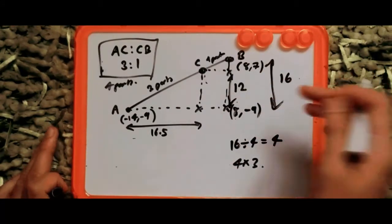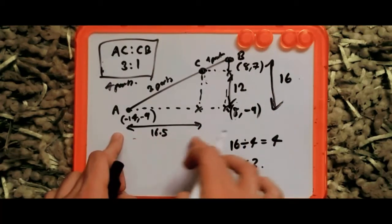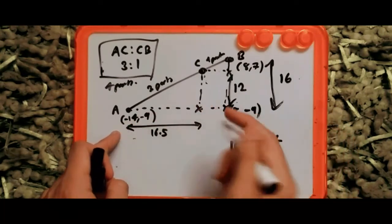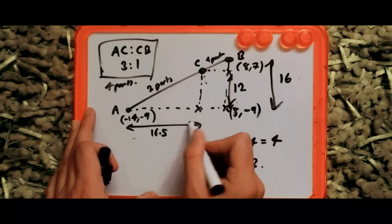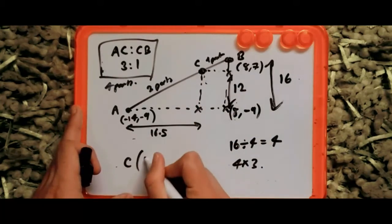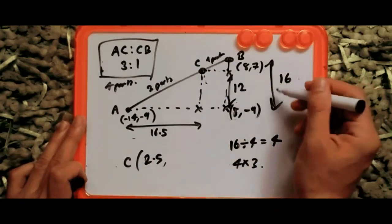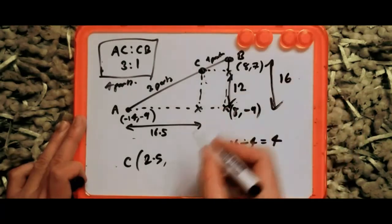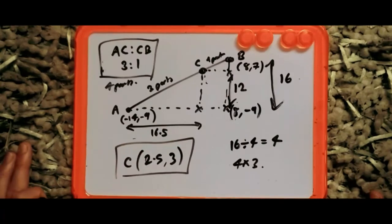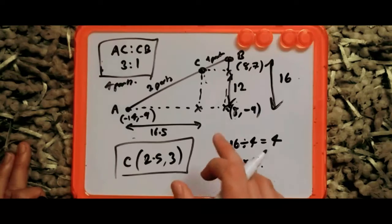Now let's do the final maths. From A on the x-axis, we add 16.5 to minus 14: minus 14 plus 16.5 gives us 2.5. For the y-axis, we add 12 to minus 9: minus 9 plus 12 gives us 3. So the coordinates of C are (2.5, 3).